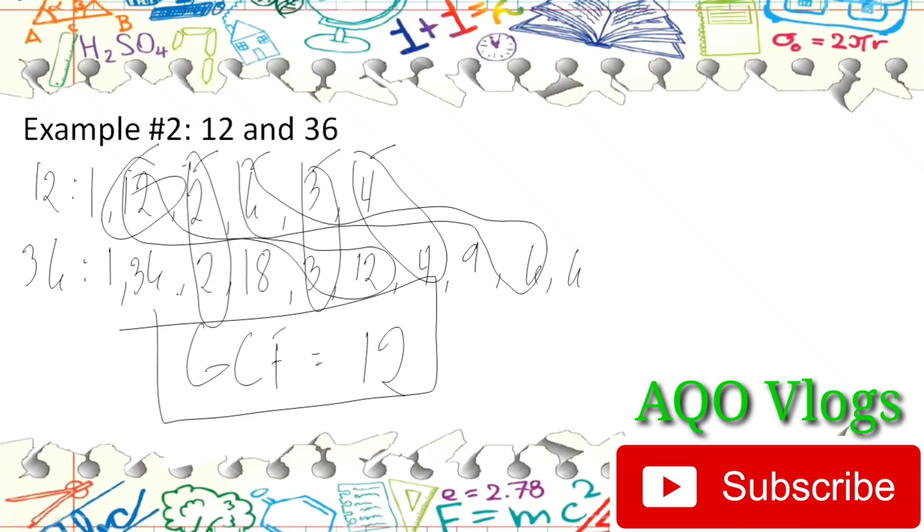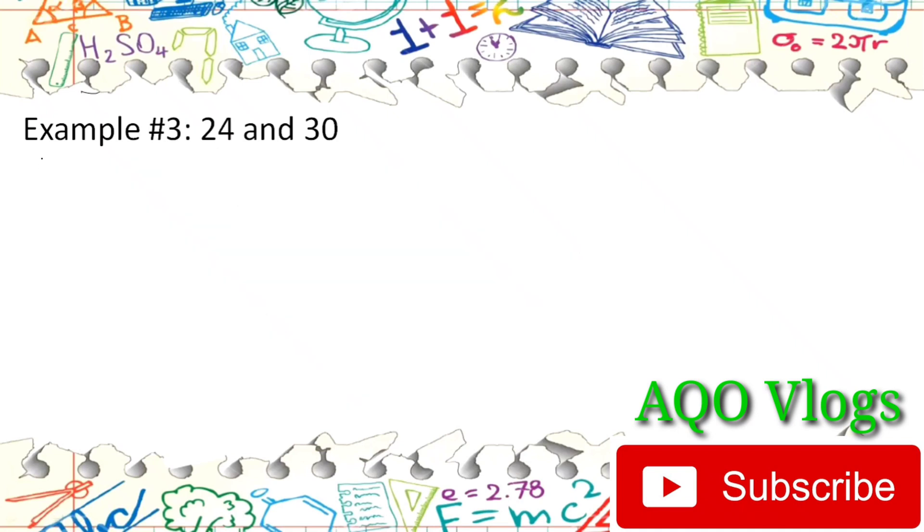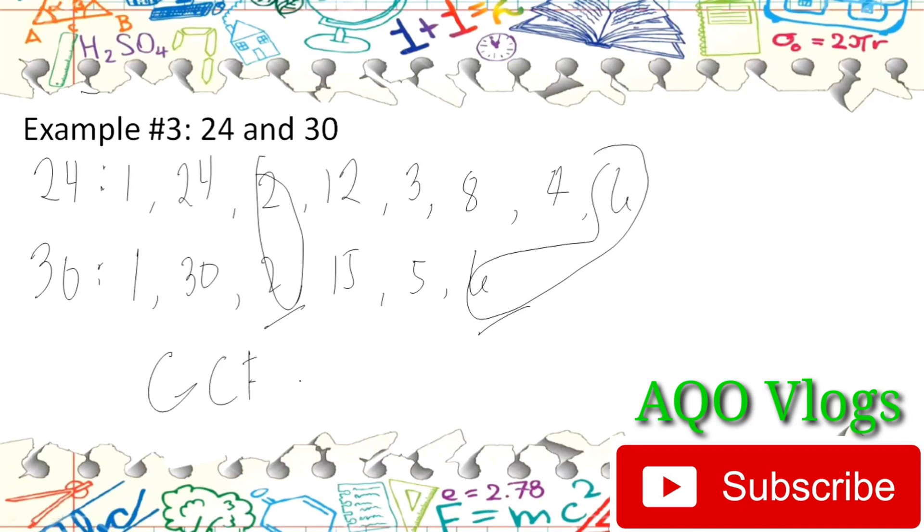Last example for this discussion: we have 24 and 30. The factors of 24 are 1 times 24, 2 times 12, 3 times 8, and 4 times 6. Next, the factors of 30 are 1 times 30, 2 times 15, and 5 times 6. Now let's find common factors except from 1. So we have 2 and we have 6. Among the two factors, 2 and 6, the highest is 6. This means that our GCF is equal to 6, and that is our final answer.